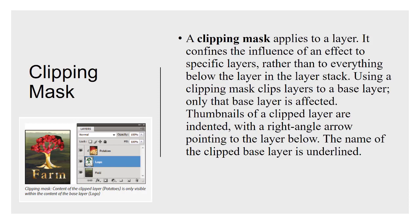A clipping mask doesn't work quite the same way as the other masks, but it shares the name so we'll cover it briefly. In the layers panel, you'll see the top layer has a little arrow pointing left and down, meaning it is clipped to the layer below. In the example, a logo image of a tree is knocking out the image of potatoes behind it — that's the effect. You can apply a clipping mask to layers with adjustments and all kinds of other things.